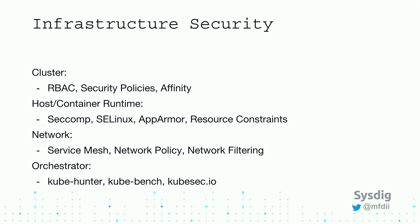There's also network policy and network filtering. There's a tool called Cilium that does layer seven network filtering, allowing you to control what applications can talk to other applications. Network policy is also something very powerful that Kubernetes allows you to abstract away. There's a tool by Aqua called KubeHunter that will actually go and pen test your Kubernetes cluster to look for common misconfigurations — things like dashboards being exposed or the Kubelet API endpoint being exposed. Every single node has a daemon called the Kubelet, and if you leave that API open, it can be compromised.